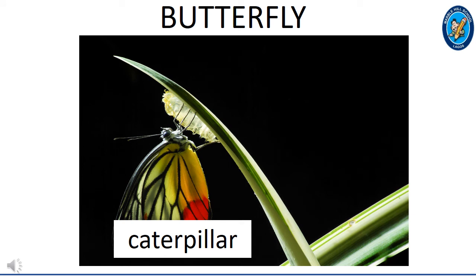This is a butterfly. Did you know that the young one of a butterfly has several names? The first one is written here on the screen. The young one of a butterfly is called a caterpillar. Sometimes it is called a pupa, and other times it is known as a larva. Isn't that amazing that one baby can have several names, just like you!